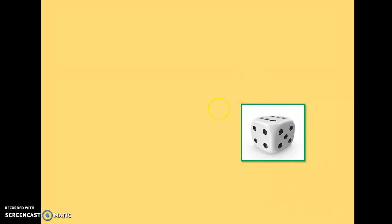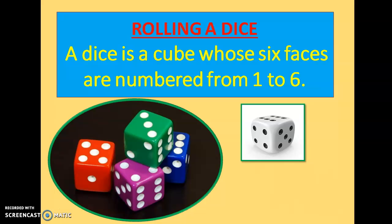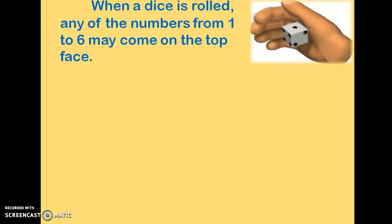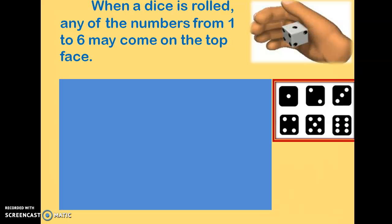A die — as you are staying at home due to the lockdown, I think you are involved in some games which use a die. Indoor games are being played more nowadays. A die is basically a cube, and we know that a cube has six faces. These six faces are numbered from one to six, each number appearing once. When you roll a die, any one of the numbers from one to six can come on the top face.